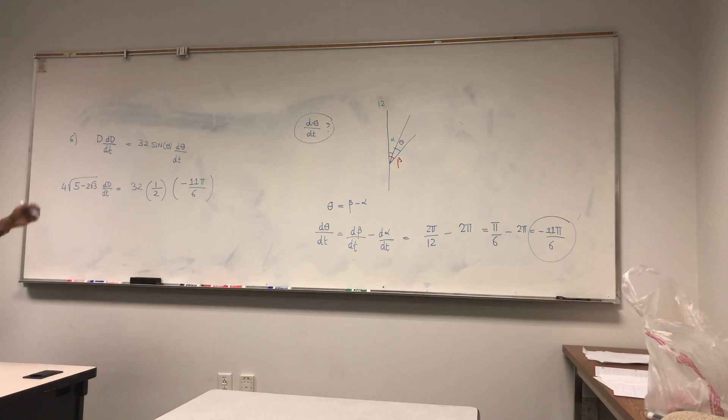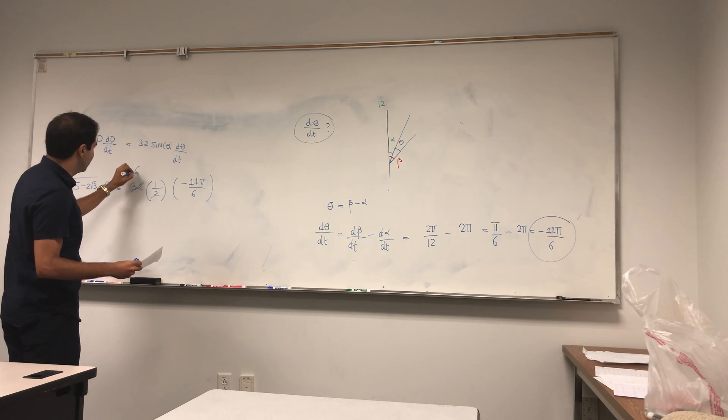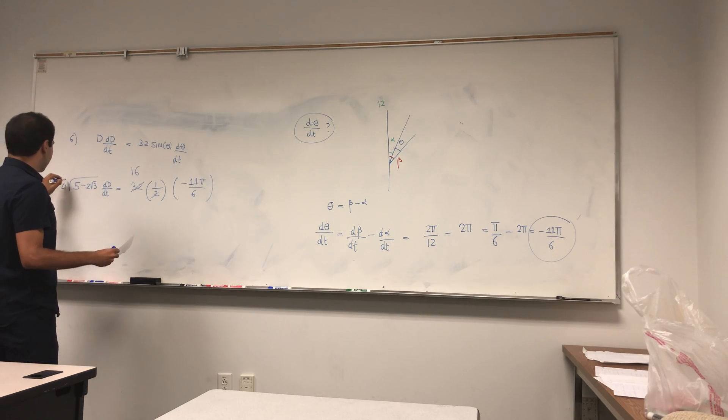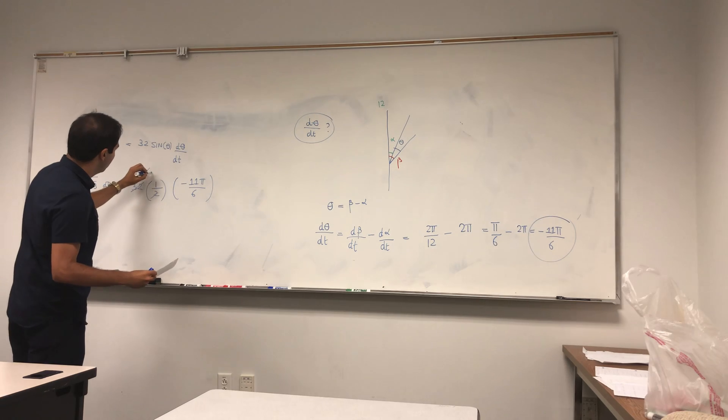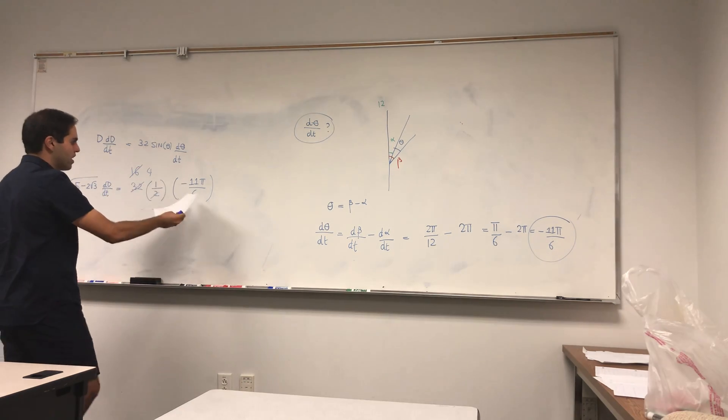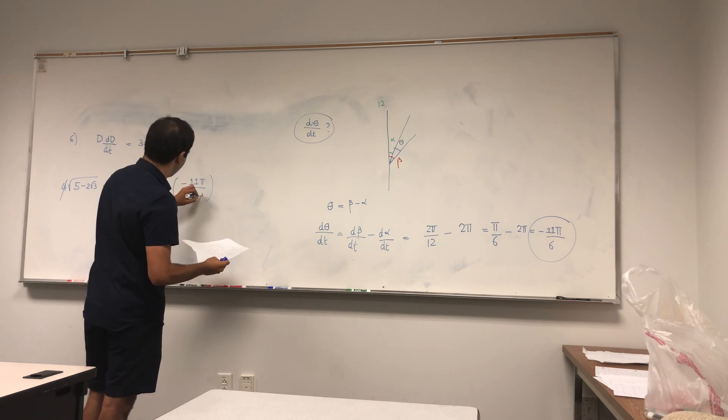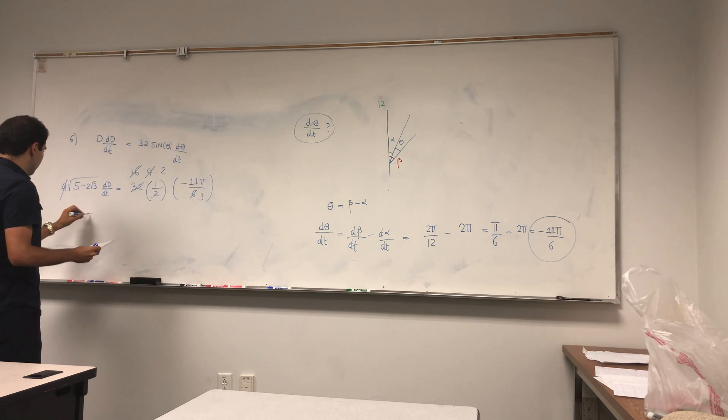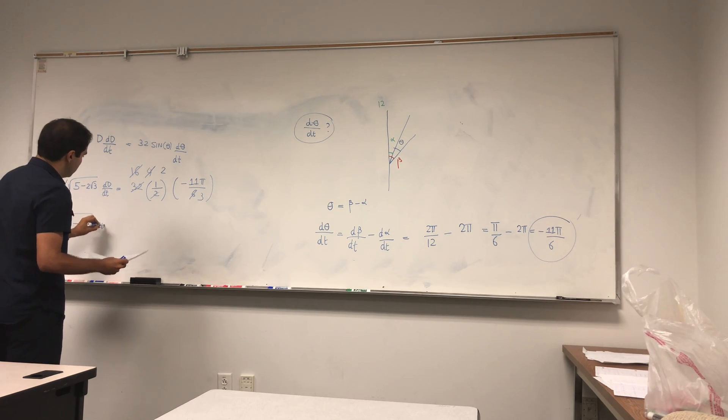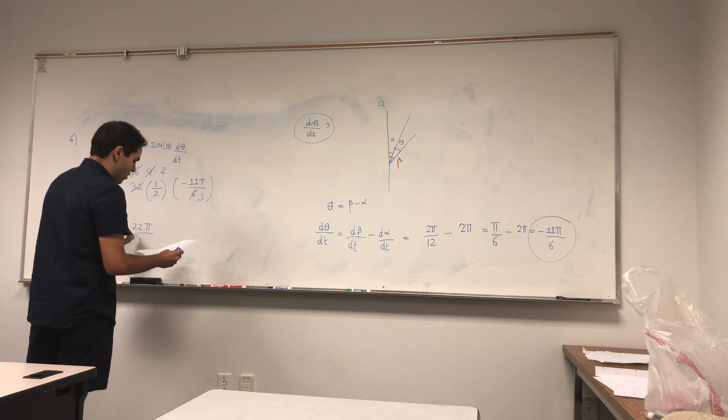And now let's have a simplification party. 32 divided by 2 is 16, that cancels out with this 4 to become 4, and then that becomes, the 4 cancels out with the 6 sort of to become 2 thirds. And so we have square root of 5 minus 2 square root of 3, dD/dt is minus 22 pi over 3.